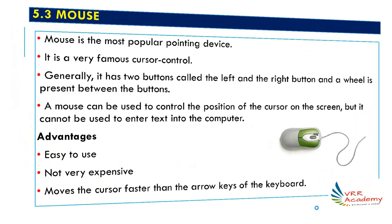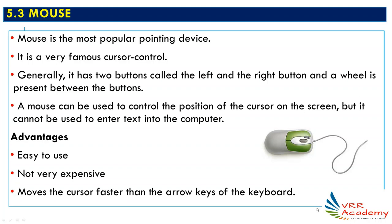Moving on to the next hardware device — mouse. This is a very popular input device, a pointing device used for cursor control. You can move the cursor in any direction using the mouse. It has two buttons — left and right — and a scroll wheel between them. The mouse can control the position of the cursor on screen, but it cannot be used to enter text. Advantages: easy to use, inexpensive, and moves the cursor faster than arrow keys.